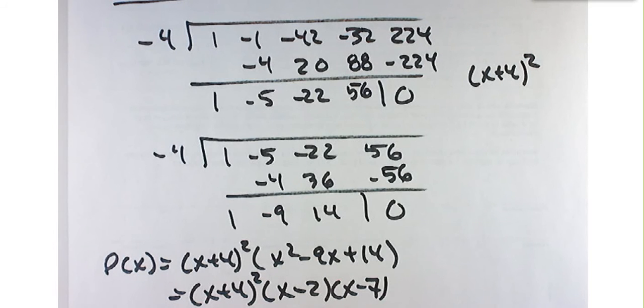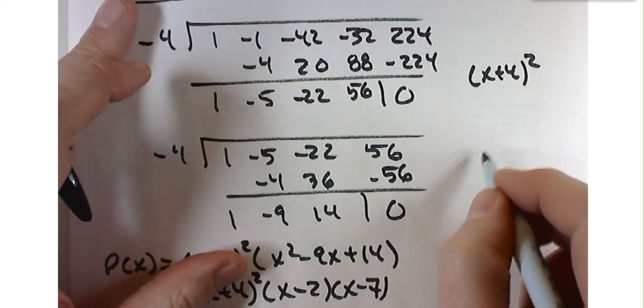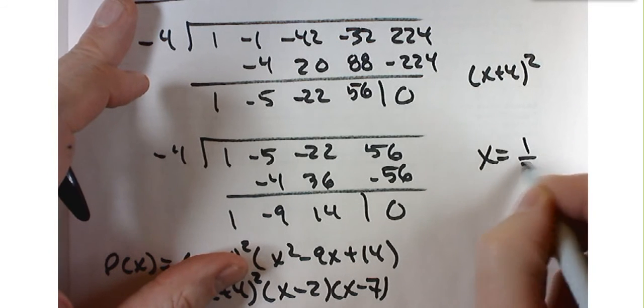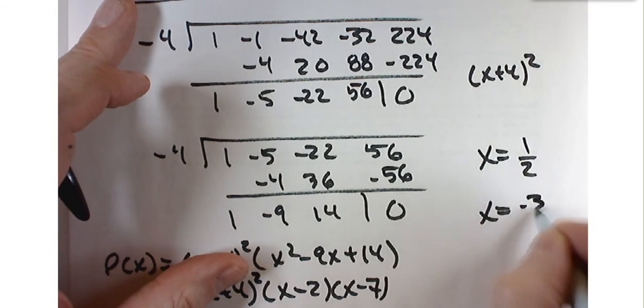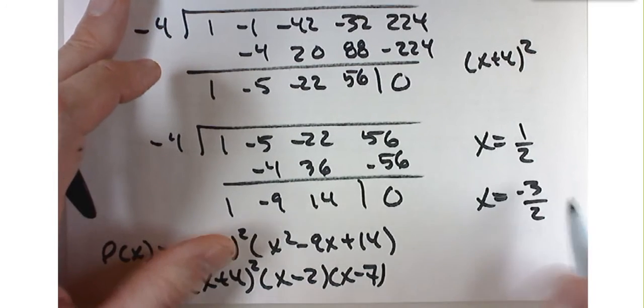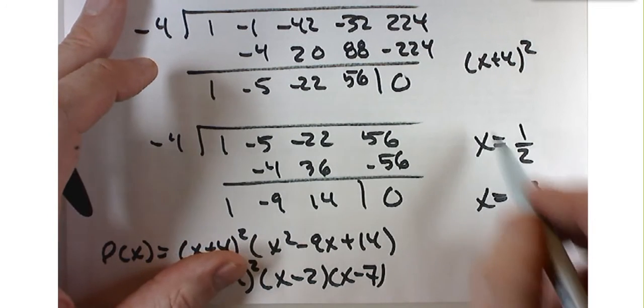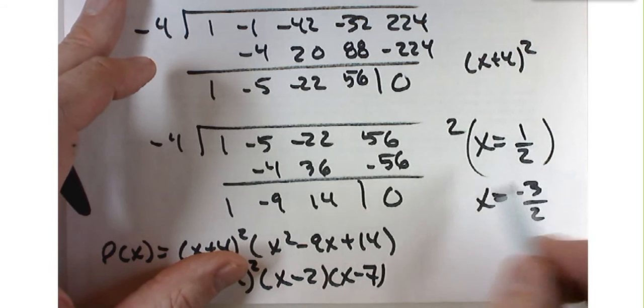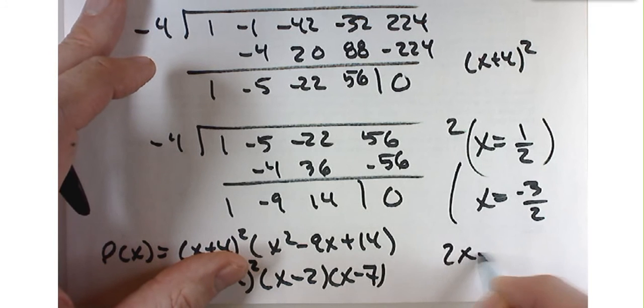Just be careful that if you have something that has fractions, say, if you have x equals 1 half, or x equals negative 3 halves, that when you turn these into binomials, you actually get rid of the fraction part. So this would be 2x equals 1, or 2x minus 1 equals 0.